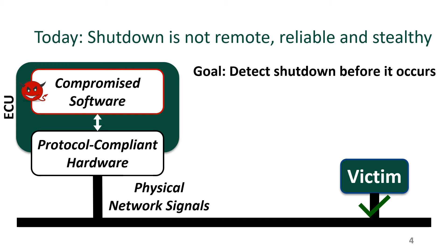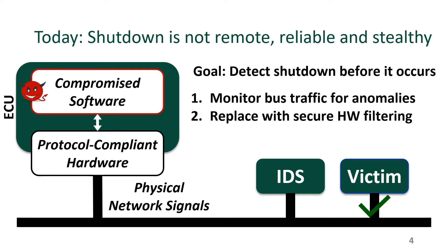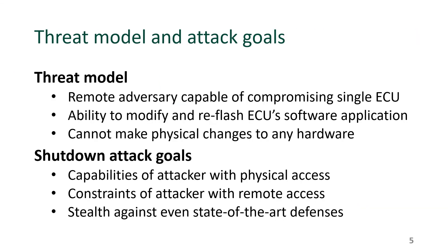The goal on the defense side is to detect a shutdown attempt in progress before the shutdown occurs. In general, there are three types of defenses. First, we can use an intrusion detection system, or IDS, to monitor the bus for anomalies. Or we can use secure alternatives to the protocol hardware. And finally, we could monitor the bus voltage for anomalies to detect the shutdown attempt. These defenses appear to be sufficient against shutdown attacks because our current shutdown techniques cannot simultaneously be remote, reliable, and stealthy.